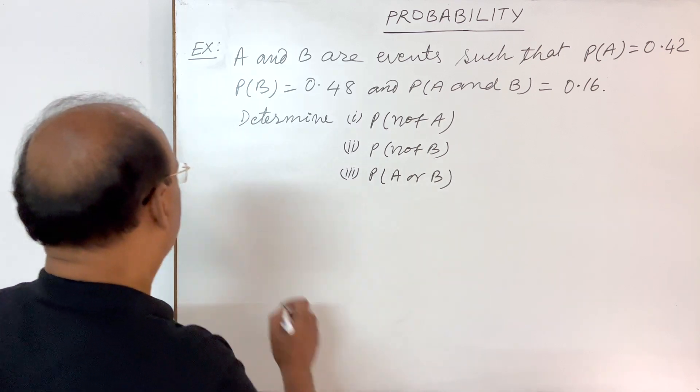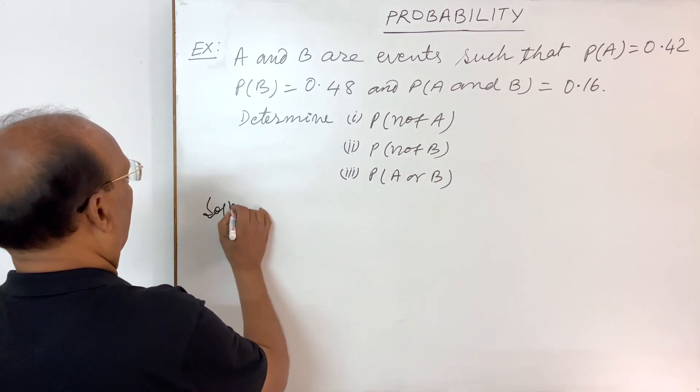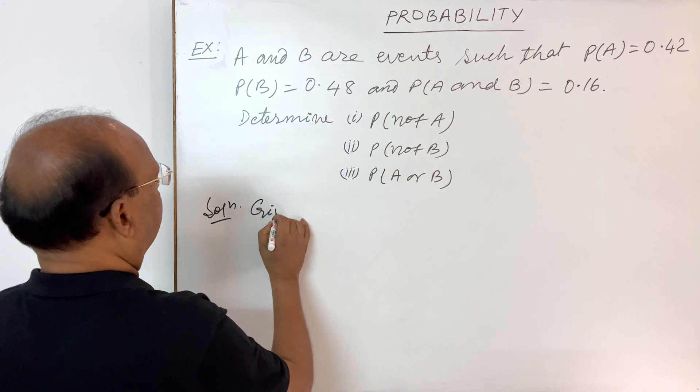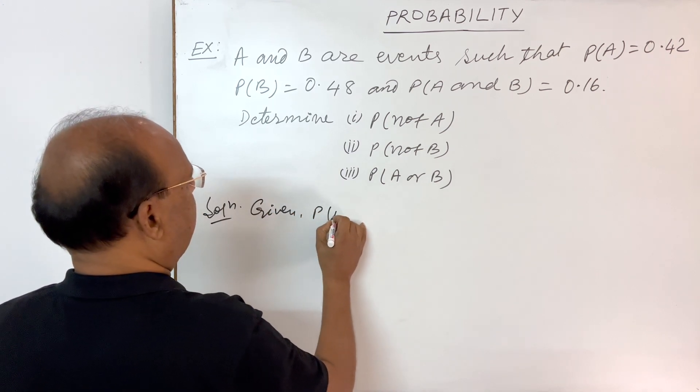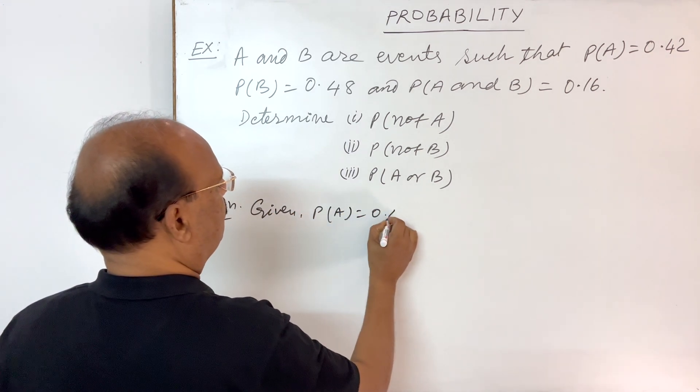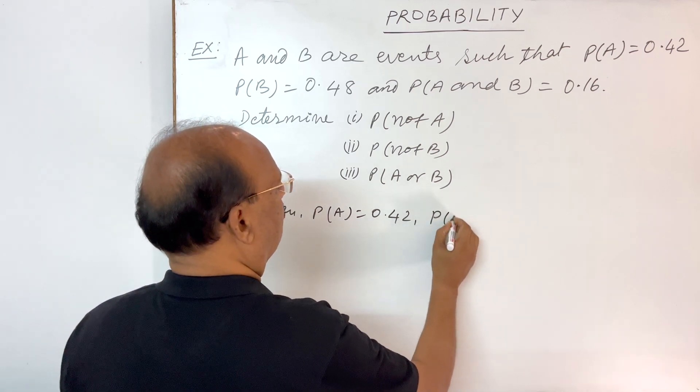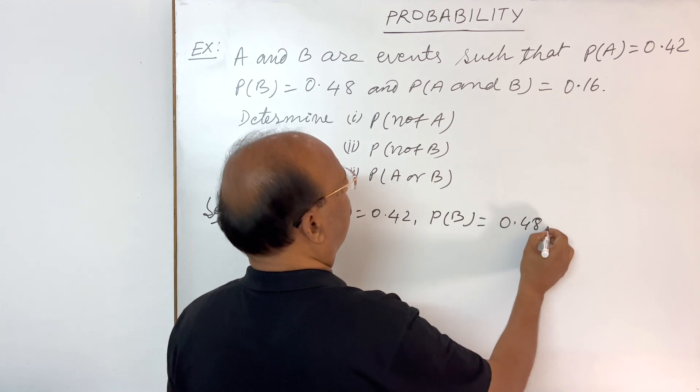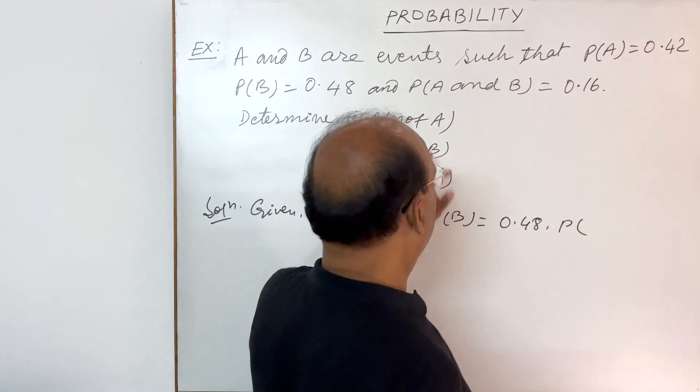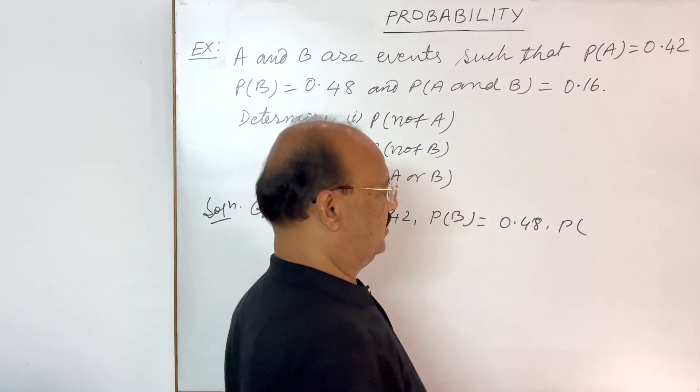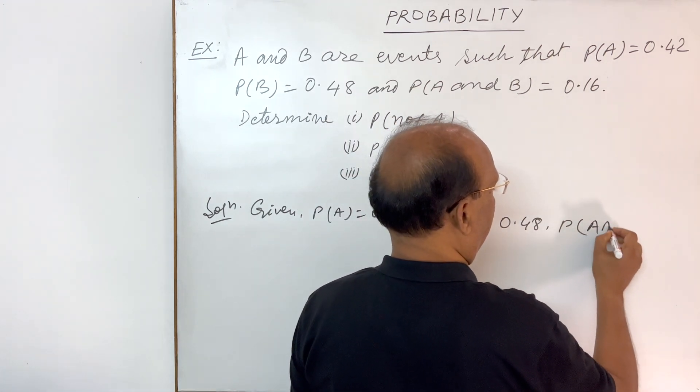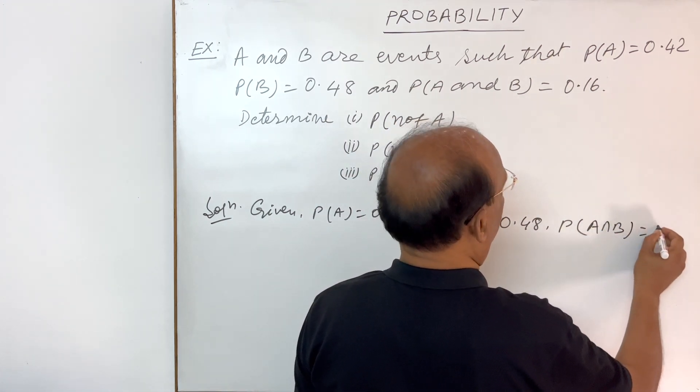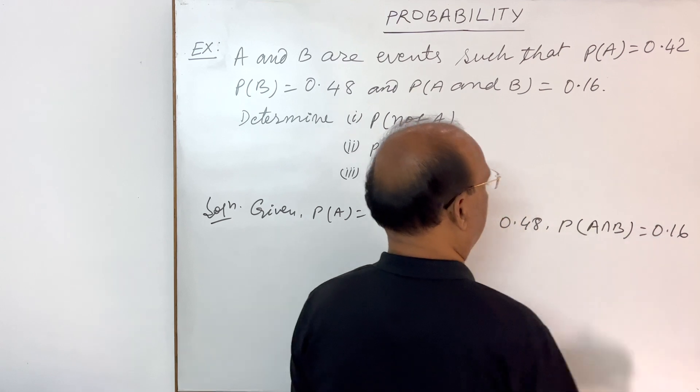So here, given probability of A is 0.42, probability of B is 0.48, and probability of A and B means A intersection B. So probability of A intersection B is equal to 0.16.